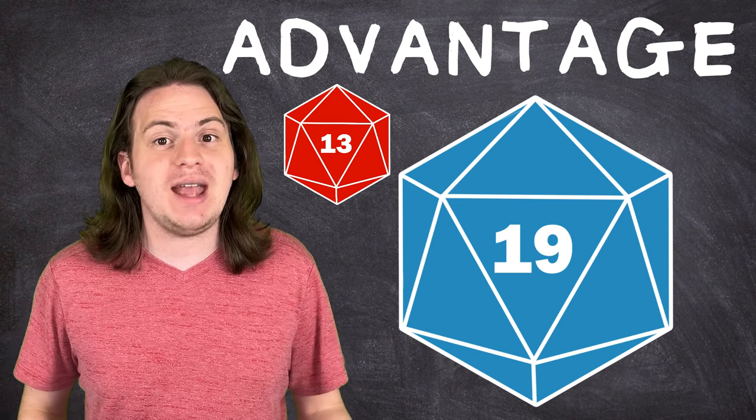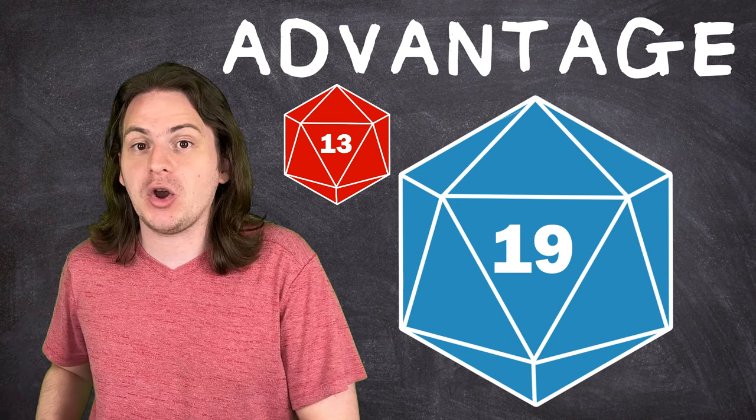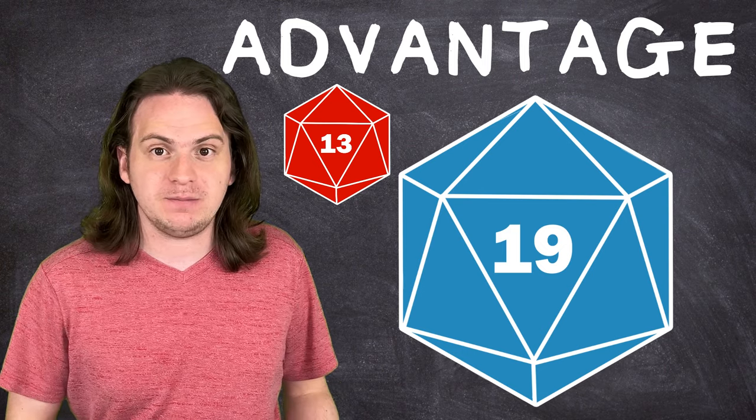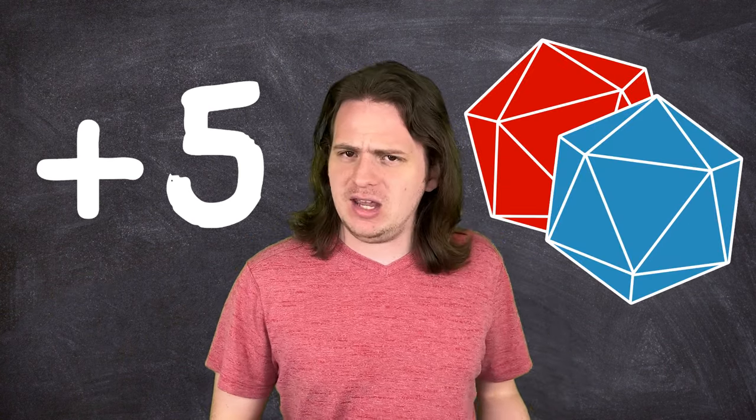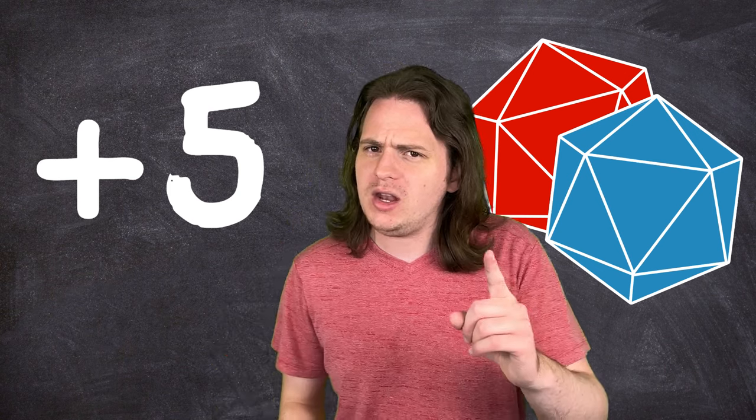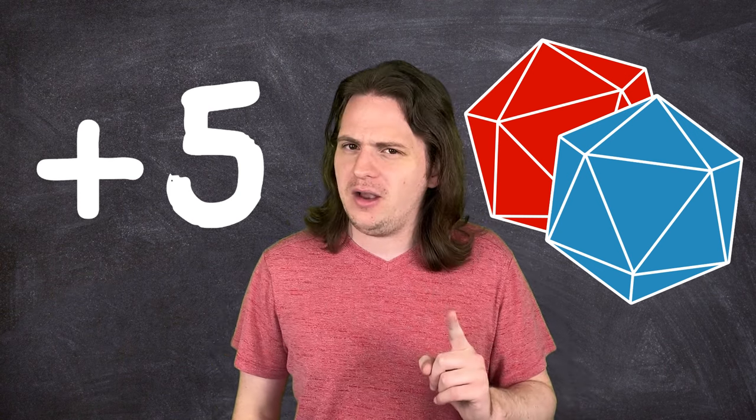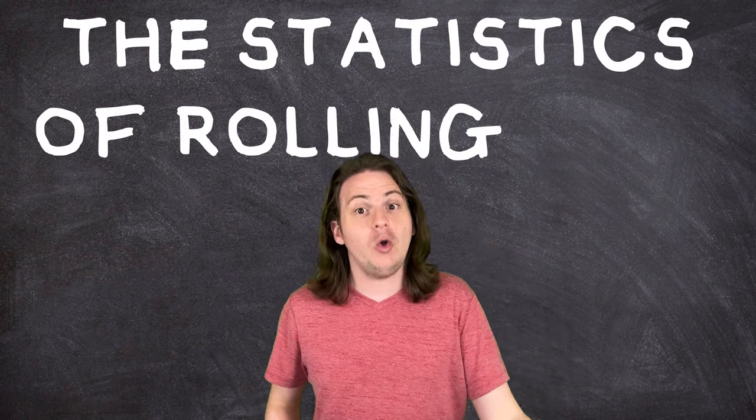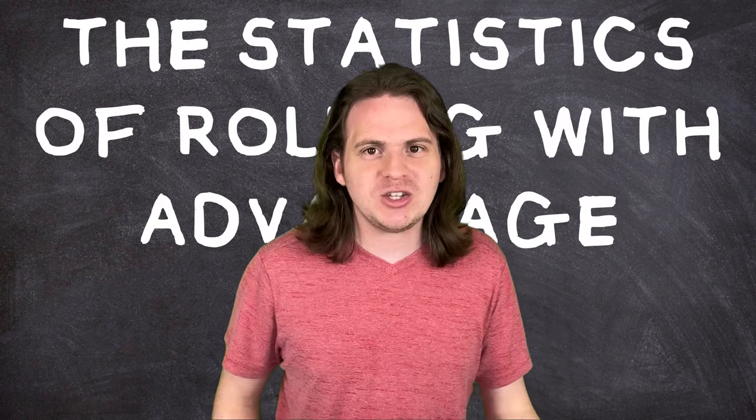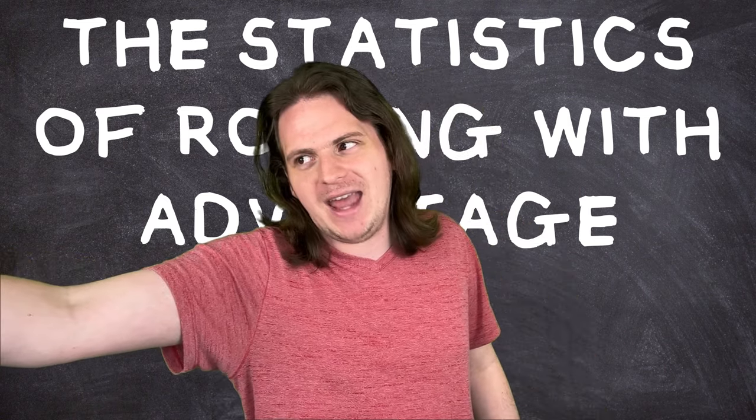Rolling this way increases your chances of rolling a high number simply because you got more dice. So say in one of these games you have to choose between an ability that would give you a flat plus 5 bonus to a certain type of roll, or one that would give you advantage on those same rolls. Which one would statistically be better? The answer is surprisingly complicated. This is the statistics of rolling with advantage. Richard, hit that intro.